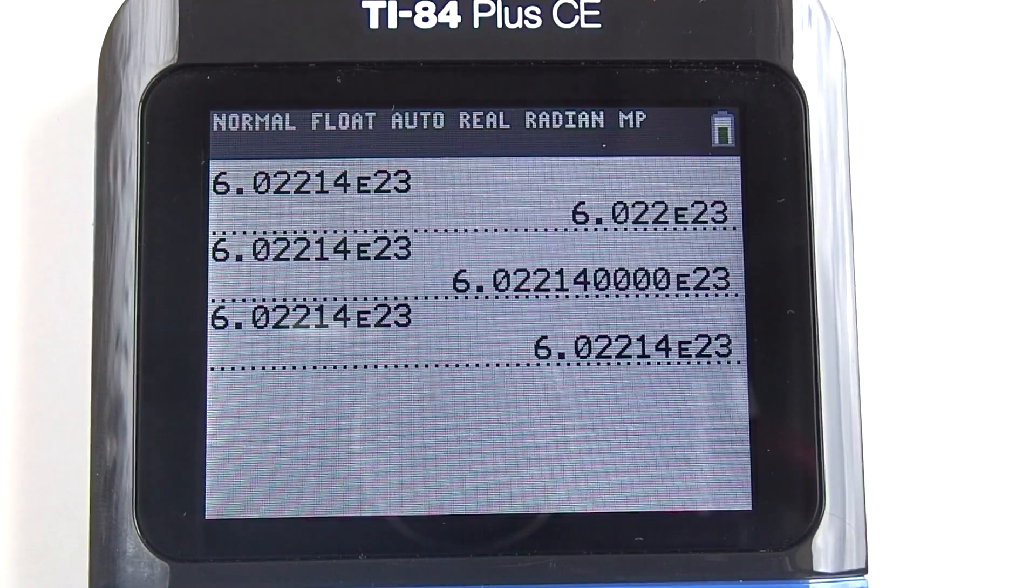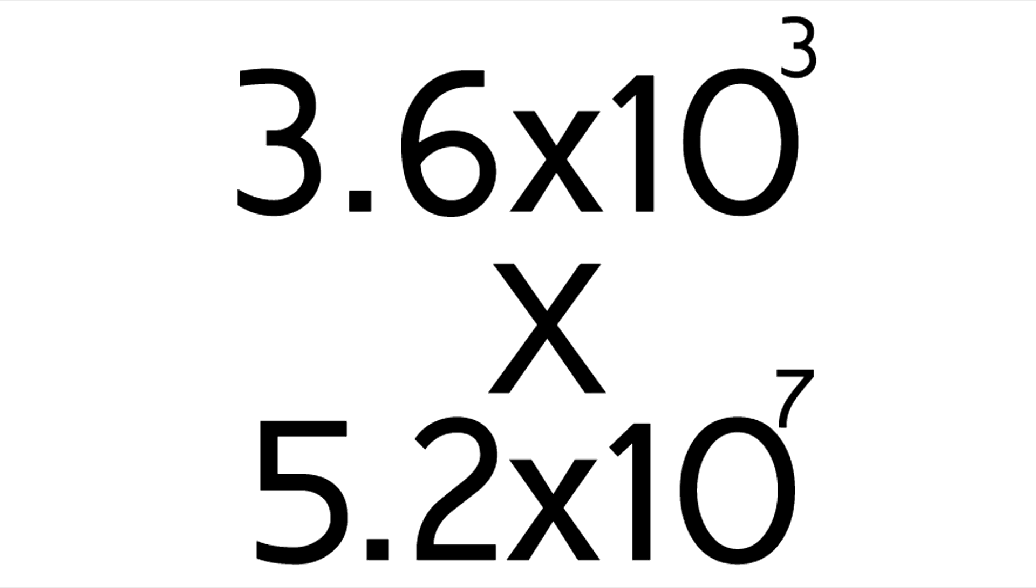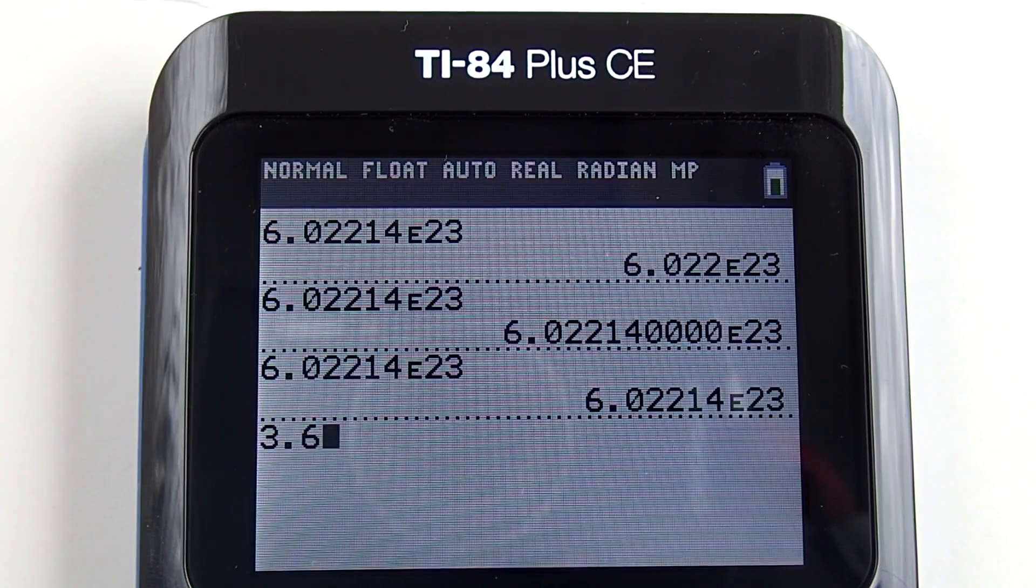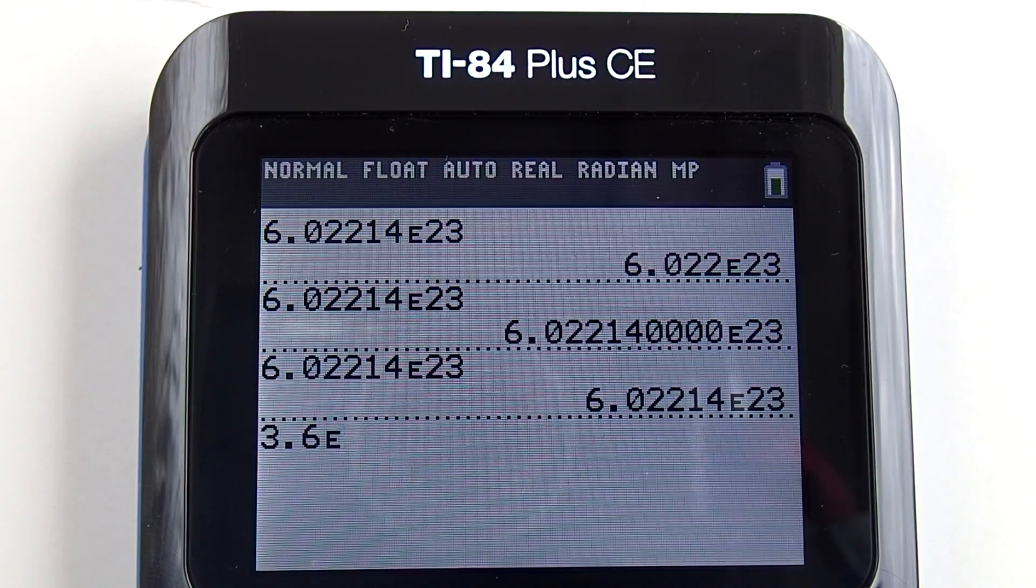Let's multiply two scientific notation numbers together. Let's multiply 3.6 times 10 to the third, multiplied by 5.2 times 10 to the seventh. 3.6 second comma 3,